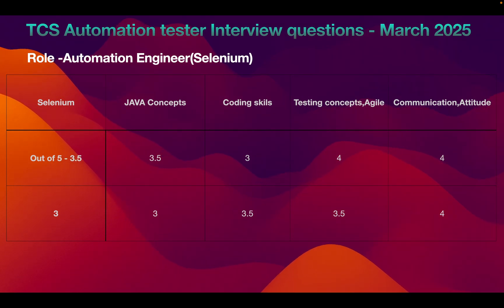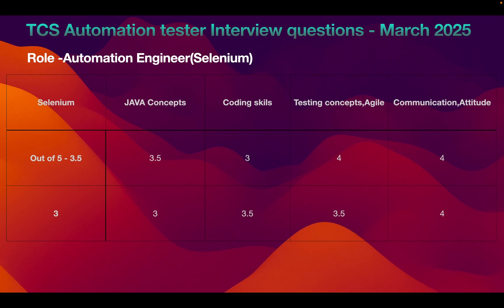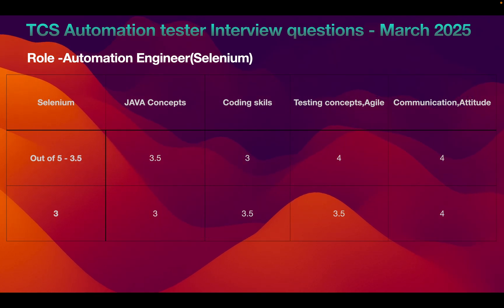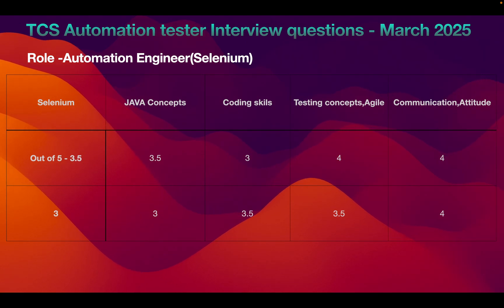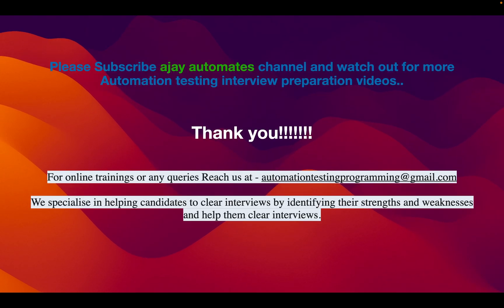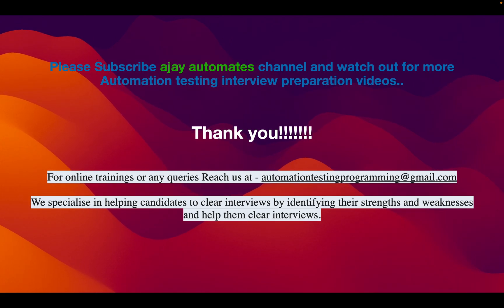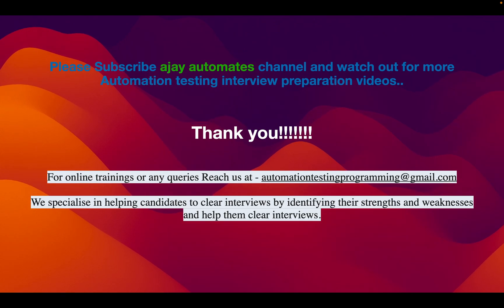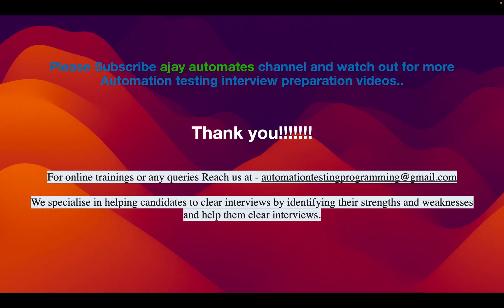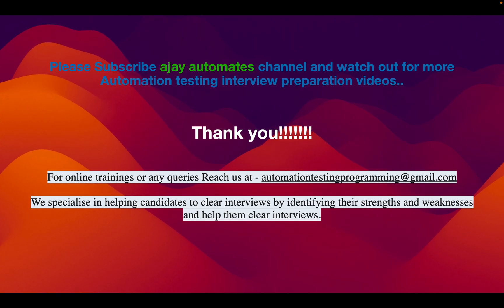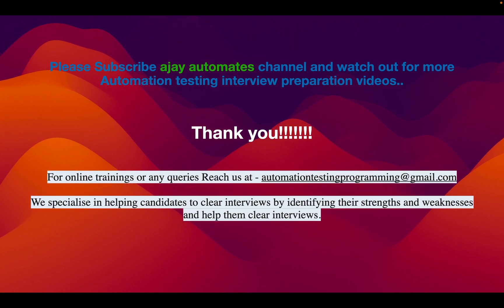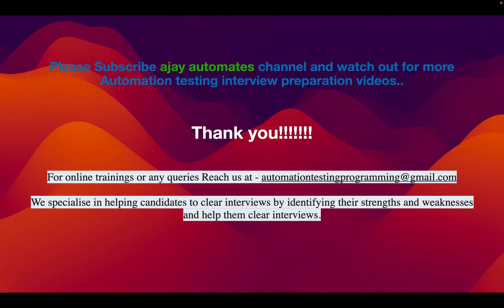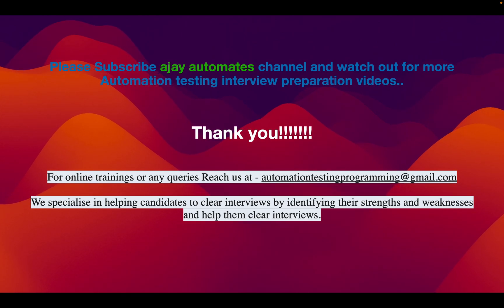You need to score more than 3 in all areas: coding skills, Java concepts, Selenium concepts, automation framework techniques, agile concepts, and communication. I hope this video will be helpful for your upcoming automation interview preparation. Please subscribe to Ajay Automate channel. If you're looking for training or struggling to clear automation interviews, reach us at automationtestingprogramming@gmail.com. Thank you, take care, bye.